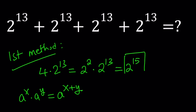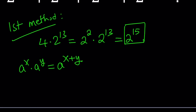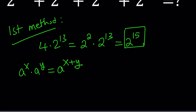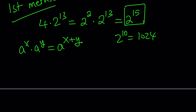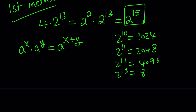In the simplest form, we can leave it like that because that would be the exact value. If you want to find it numerically, write the 2 fifteen times and multiply. If you do know that 2 to the power 10 is 1024, this would be helpful because 2 to the power 11 would be double that, 12 would be double that, and then 2 to the power 13, you're just going to double that.